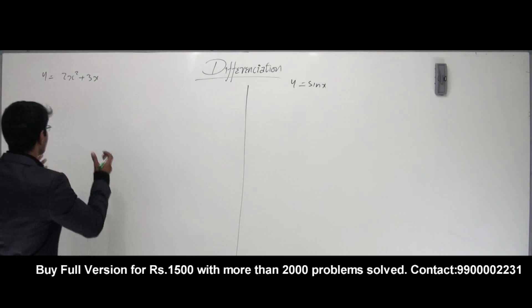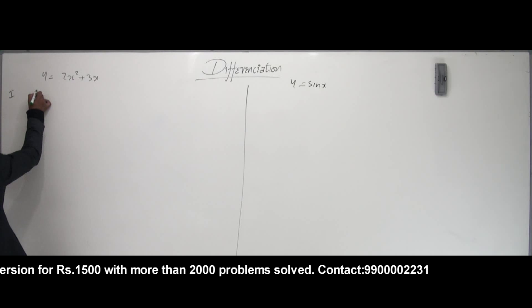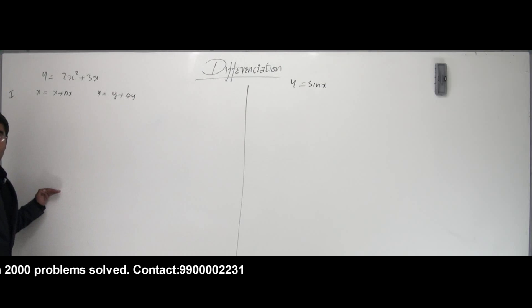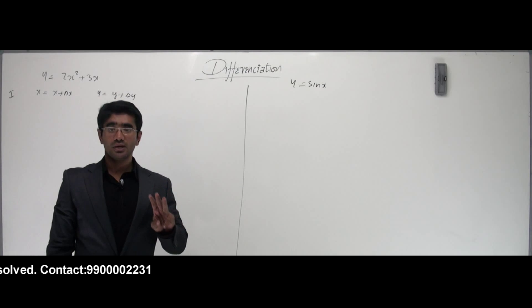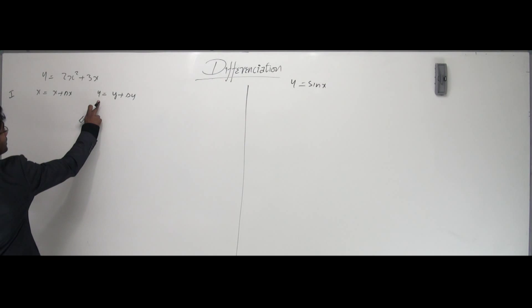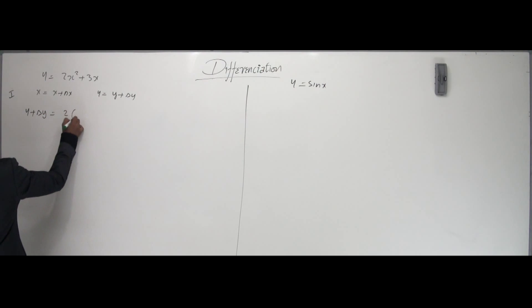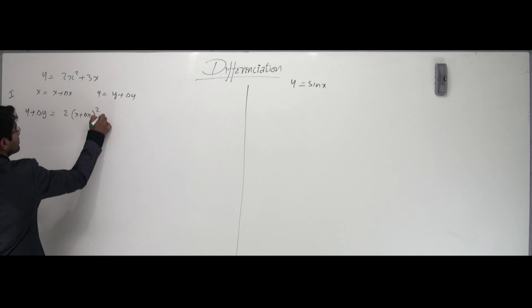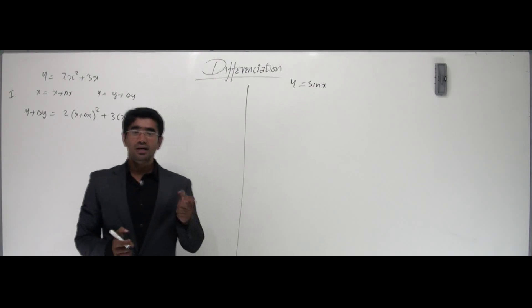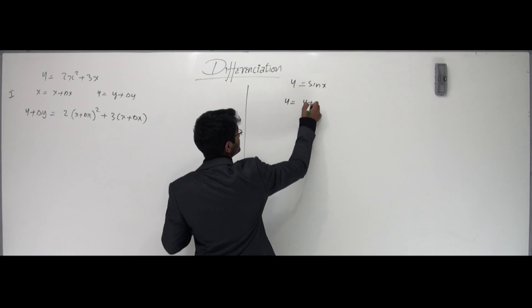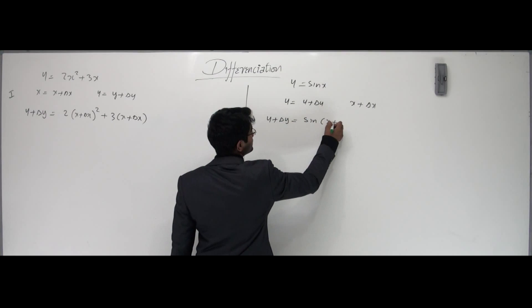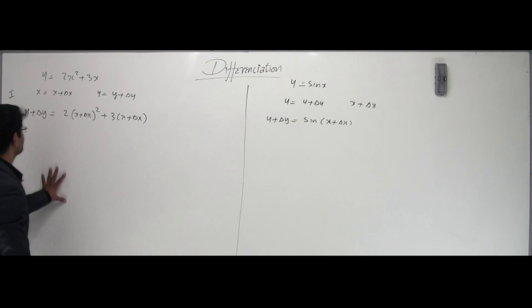Now, the first stage is all about incrementing x as x plus delta x, and y would become y plus delta y. For the algebraic problem, y plus delta y equals 2 times (x plus delta x) whole squared plus 3(x plus delta x). For the sin x problem, y plus delta y equals sine of (x plus delta x). That's the first stage.